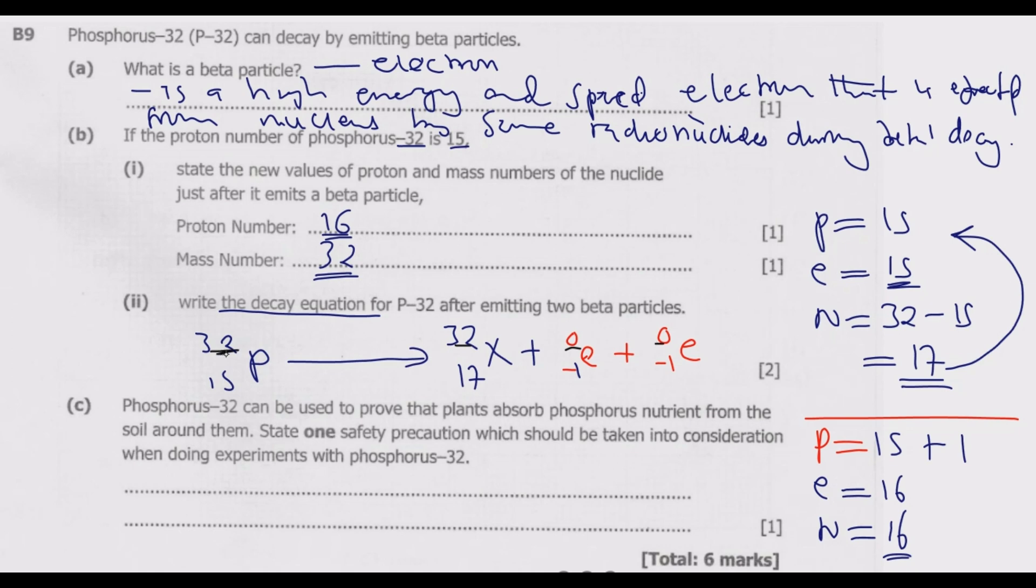When you add, 32 plus 0 plus 0 gives 32, which is balanced. When you add 17 plus negative 1 plus negative 1, you get 15, which balances. Make sure to show these electrons collectively.